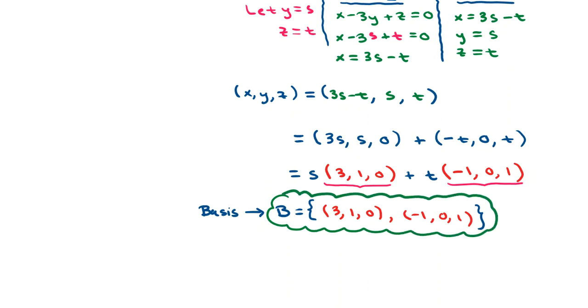It also asks for the dimension, namely the dimension of the solution space. So in other words, dim B. Well, this is going to be quick. How many basis vectors does the basis B have? It has two basis vectors, therefore the dimension of B is 2.